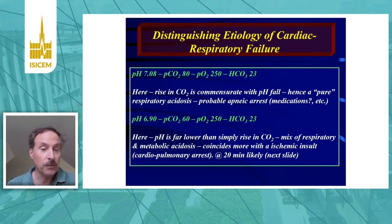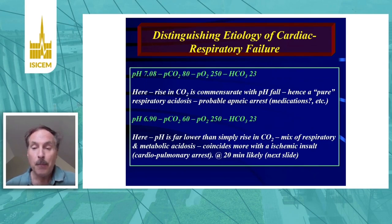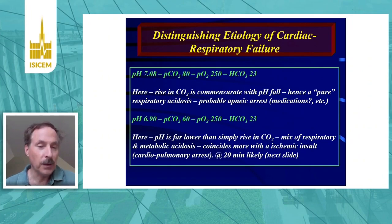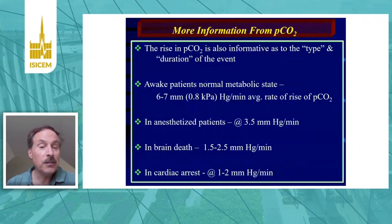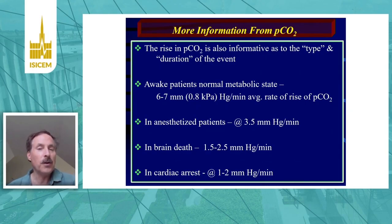In contrast, the second blood gas was pH 6.90, PCO2 of 60, with the same PO2 and bicarbonate. If we do the calculation, we find that the pH is far lower than what could be accounted for by the PCO2 rise from 40 to 60. Hence, this is a mixed respiratory and metabolic acidosis and coincides more likely with a true cardiopulmonary arrest. If we were told that this was a witnessed arrest — hence the cardiac component occurred immediately — we could have determined the time that this arrest happened from the time until the blood gas was obtained, which typically occurs after the patient is intubated and provided 100% oxygen. The rise of PCO2 in our blood gas is a consequence of our apneic state, its duration, and also our metabolic state.